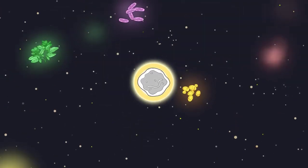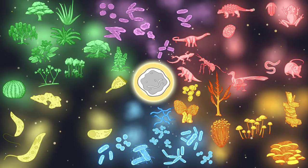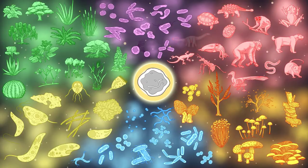But how did one ancestral life form give rise to so many diverse species, plus the innumerable species in the fossil record that went extinct along the way?